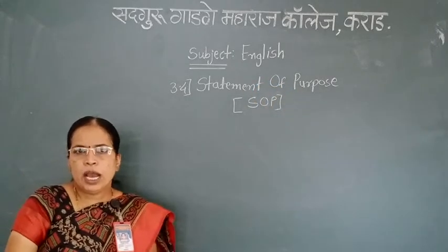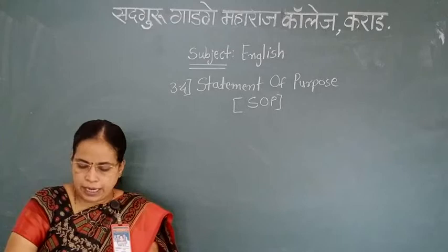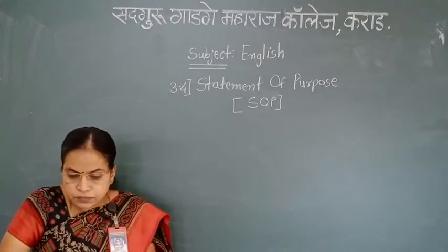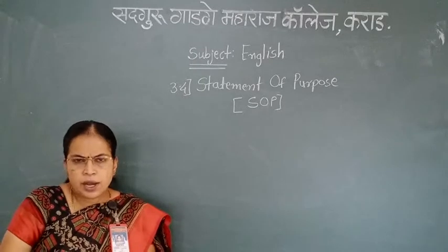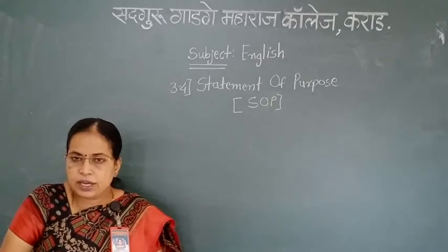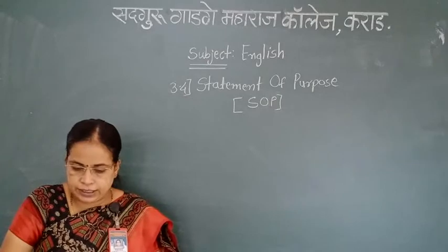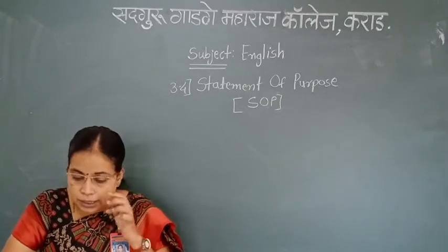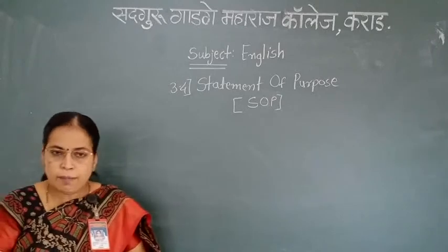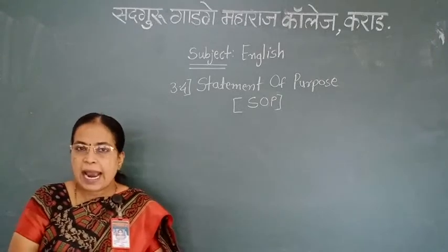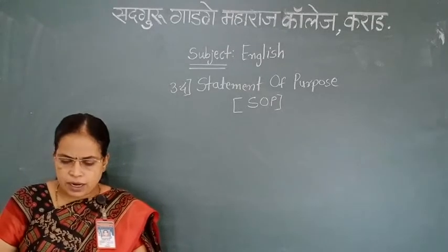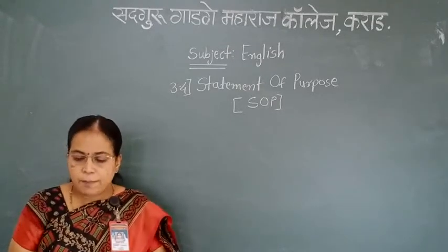Firstly, we are going to solve icebreakers. See page number 153. First question: match the professions with the desired qualities. In the first column, professions are given and in the next column, qualities of the profession are given, and we have to match the pairs.